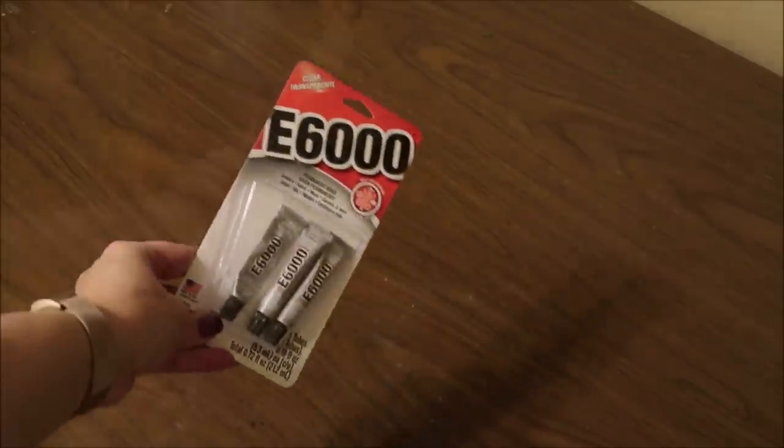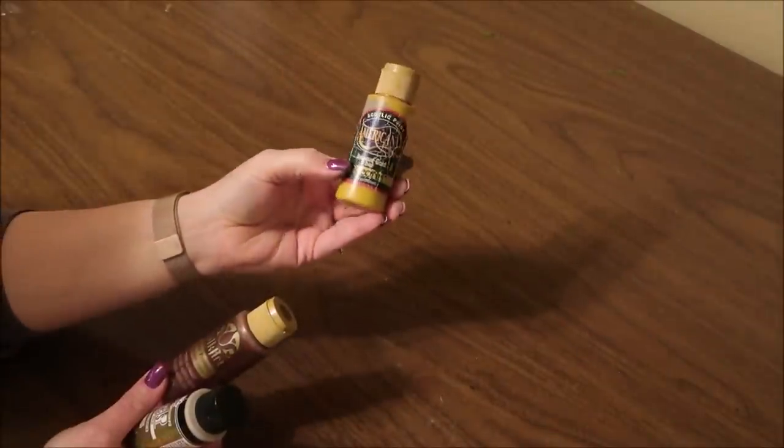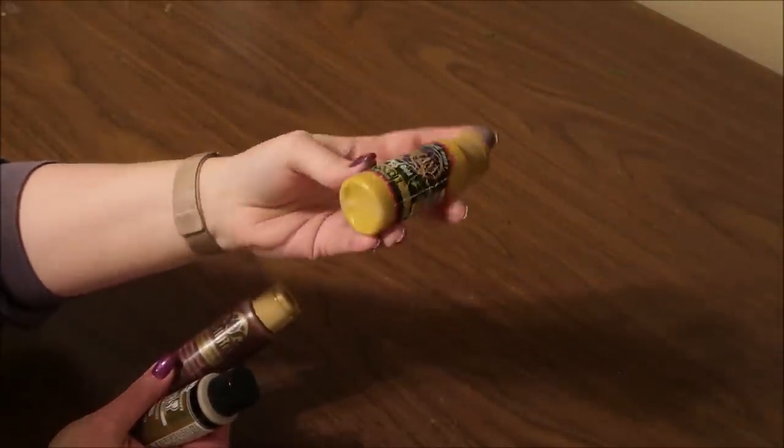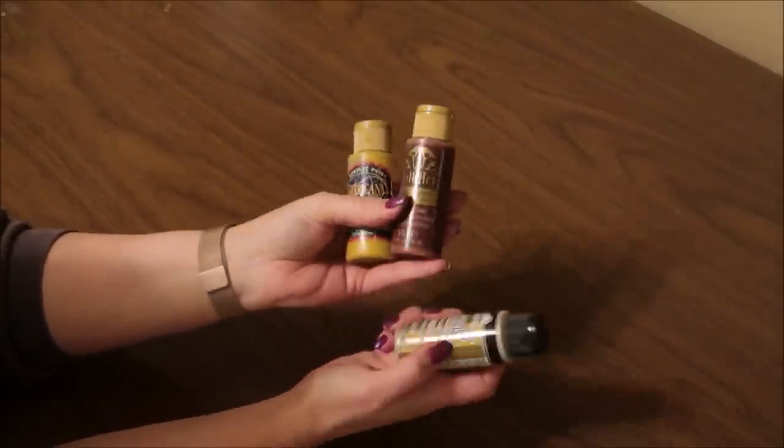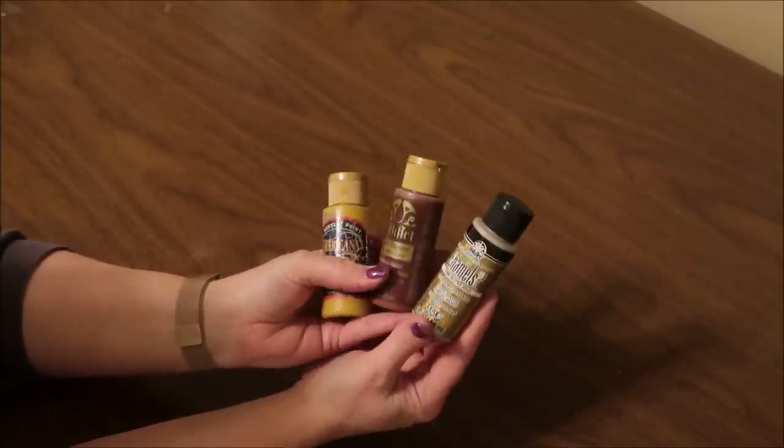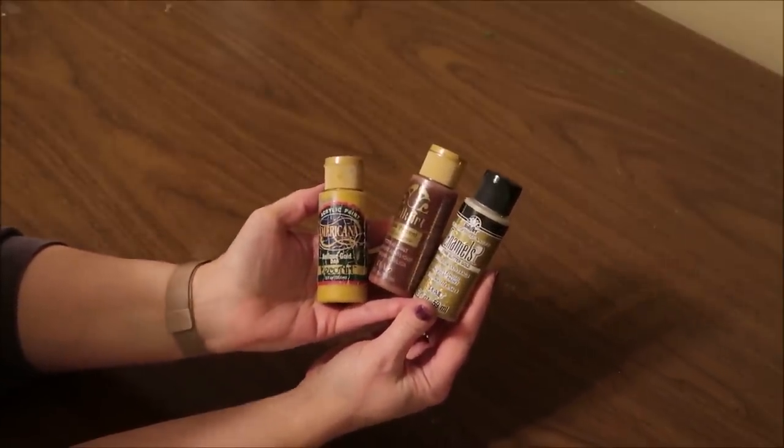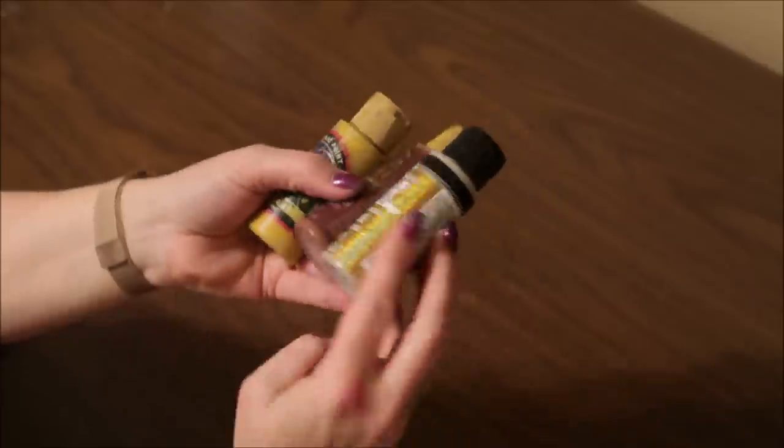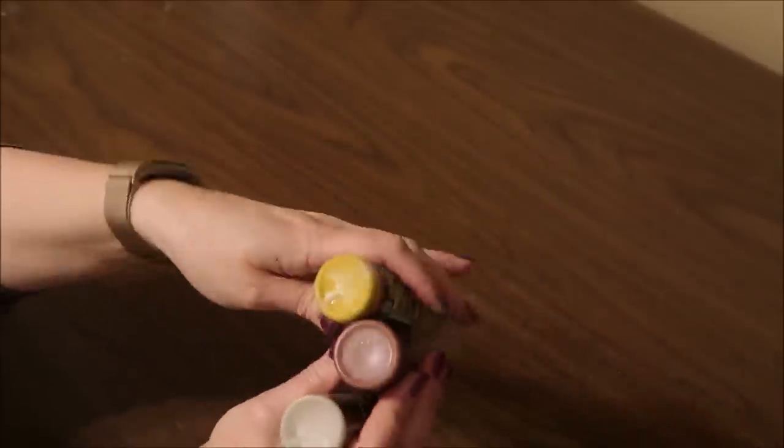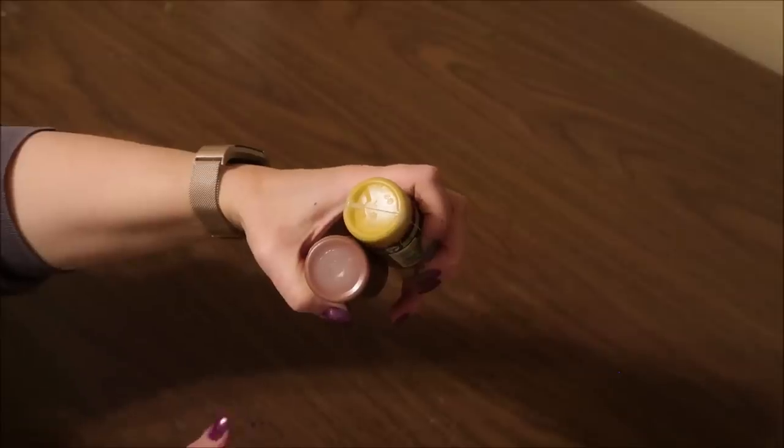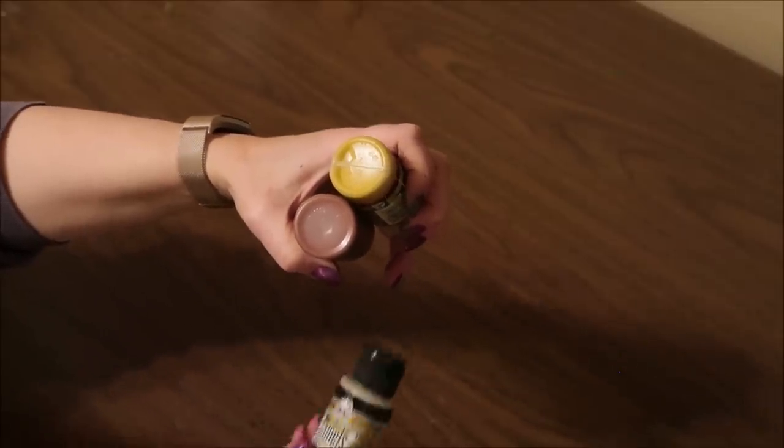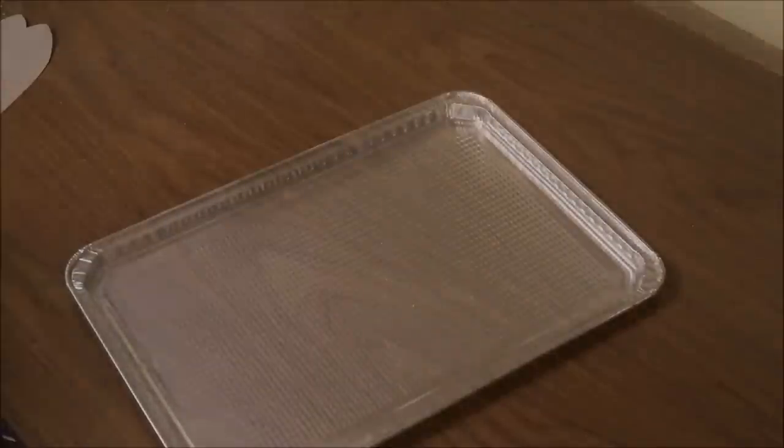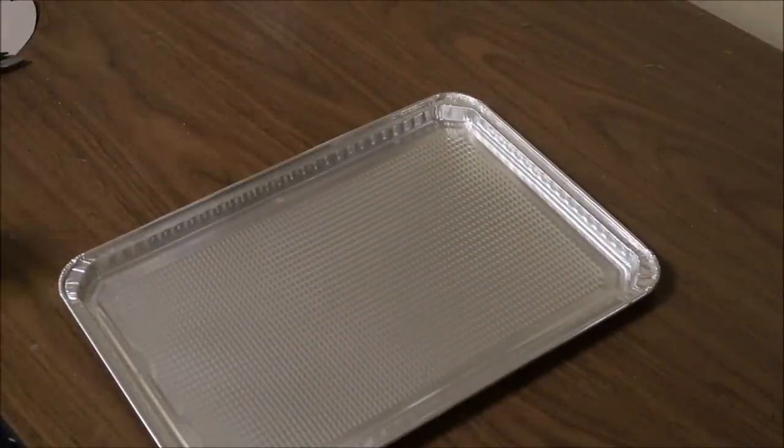You can just use hot glue for this project, but if you want it to be stronger or you're going to put it outside, I would highly recommend using something like E6000. For the center of the flower I'm going to be using some paints I've had for a really long time - a gold color, antique gold, and then a burnt sienna and some gold sparkle paint just to add a little bit of shine. You can use any colors that you want for the center.